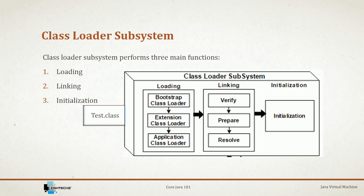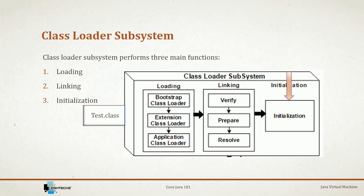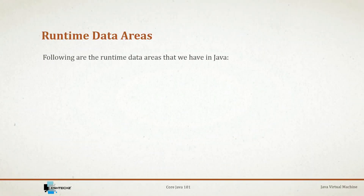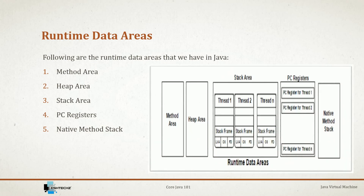The last phase is initialization: all static variables are assigned their original values and any static blocks get executed. The next section in JVM is runtime data areas, which are divided into five areas: method area, heap area, stack area, PC registers, and native method stack. This is how runtime data areas look in JVM's architecture.